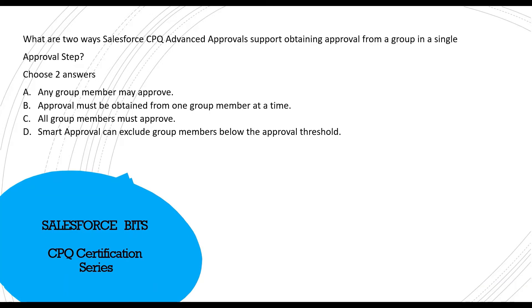Here is the first question: What are the two ways Salesforce CPQ Advanced Approvals support obtaining approval from a group in a single approval step? Choose two answers. Option A: Any group member may approve — yes, possible. Option B: Approval must be obtained from one group member at a time — I don't think this is true, because it's not a role hierarchy scenario where you send it one after another.